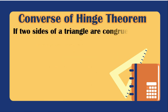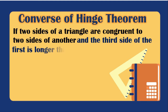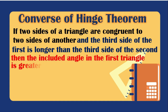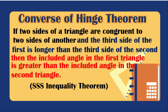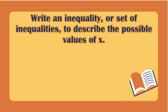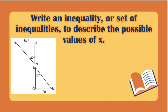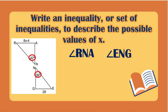The last theorem is the converse of the hinge theorem. If two sides of a triangle are congruent to two sides of another triangle, and the third side of the first is longer than the third side of the second, then the included angle of the first triangle is greater than the included angle of the second. This is also the SSS inequality theorem. Example: write an inequality to describe the possible values of x. We identify angles with different measurements: angle RA is 42 degrees and angle EG is 36 degrees.